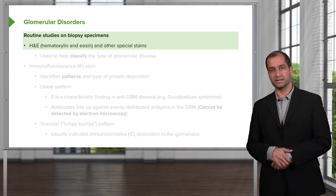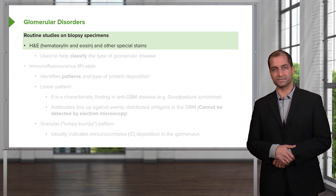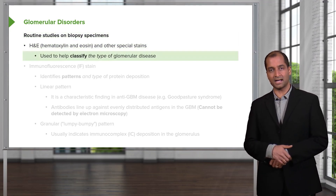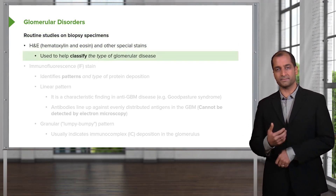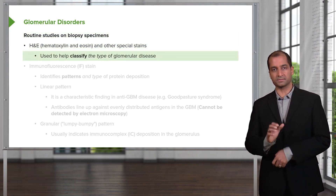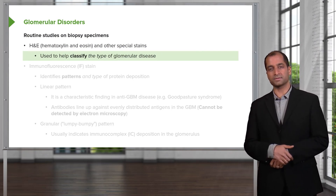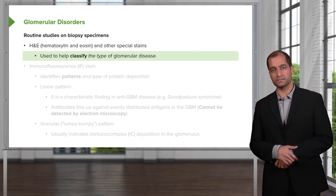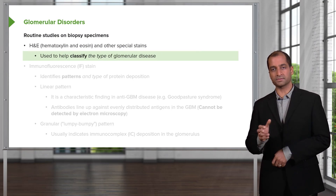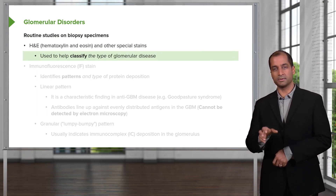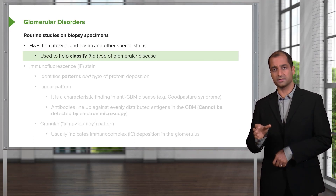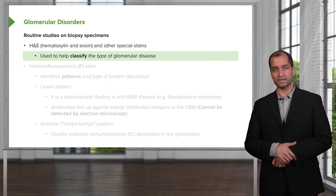You can do an H&E stain — hematoxylin and eosin — which allows us to classify the type of glomerular disease. For the most part, this will be light microscopy. As we go through the various diseases, when relevant and pertinent, we will look at diseases that are best classified through light microscopy.